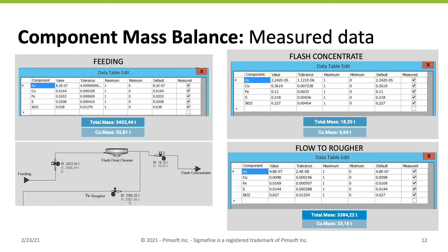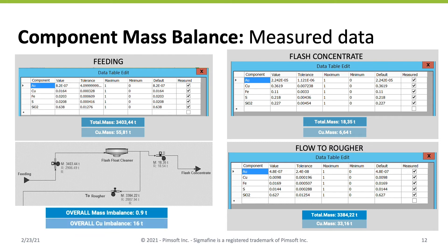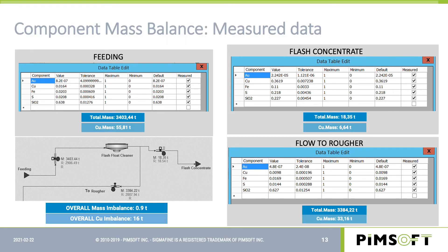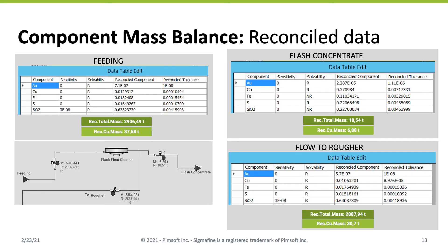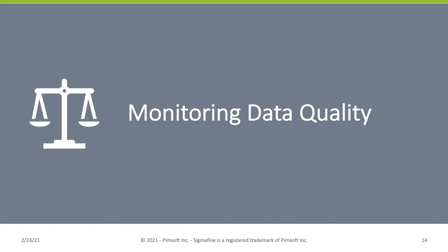Let's start with the measured data. The cleaner has one input and two outputs. If we execute the material balance around this point, we see there's an imbalance: the total mass going in versus going out shows an imbalance of 0.9 tons. At the same time, if we consider the component — copper — we have an imbalance of 16 tons. If we then run the Sigma Fine mass and component balance, we are able to resolve the imbalance on both the total mass and on the copper.